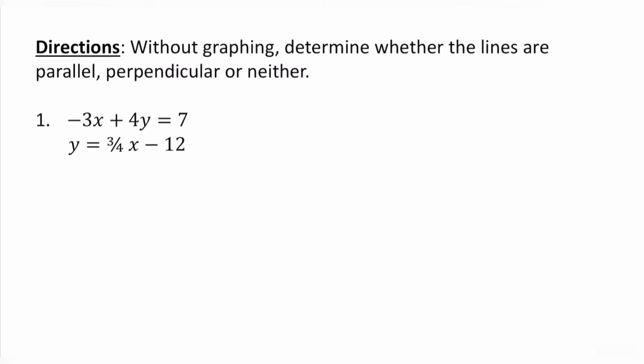Directions: Determine without graphing whether the lines are parallel, perpendicular, or neither. This is actually very easy. Once we get the y by itself, if the slope is going to be exactly the same for both lines, and the y-intercepts are different, we know automatically that these two lines are going to be parallel. If, however, the two slopes are negative reciprocals of each other, then that means that the lines will be perpendicular.